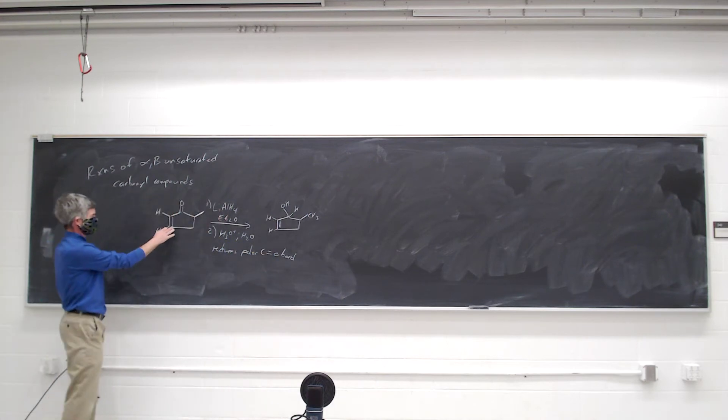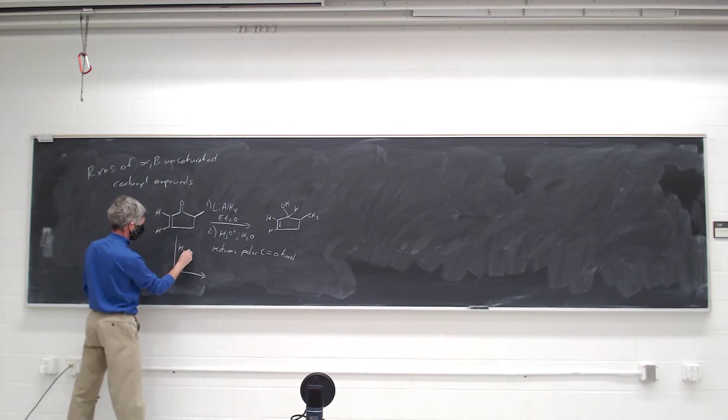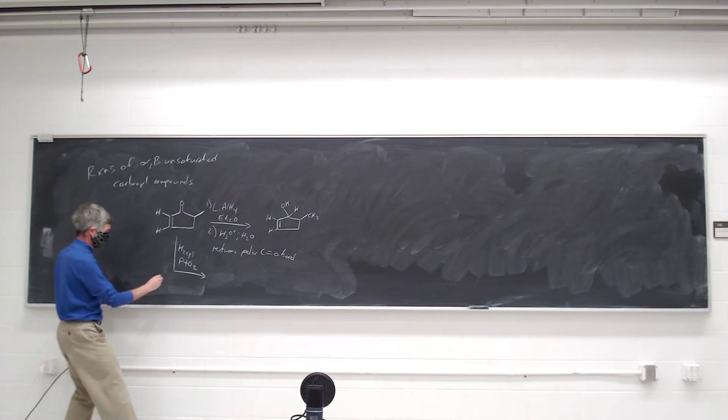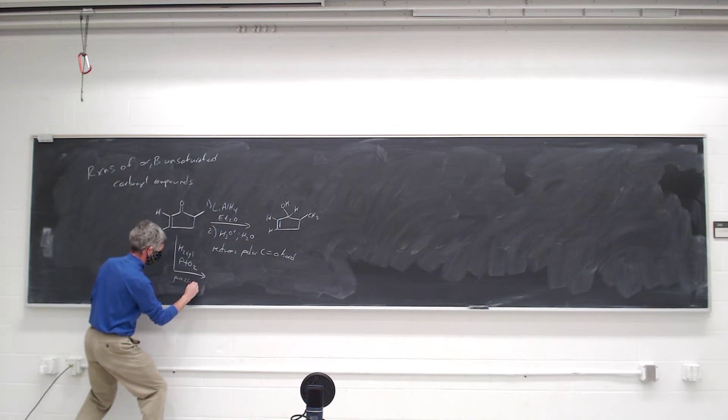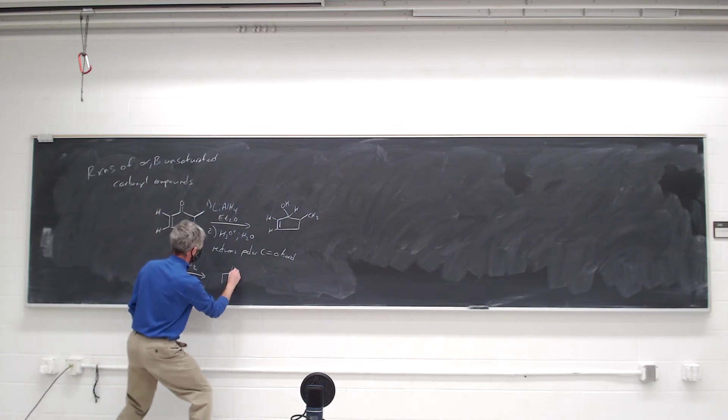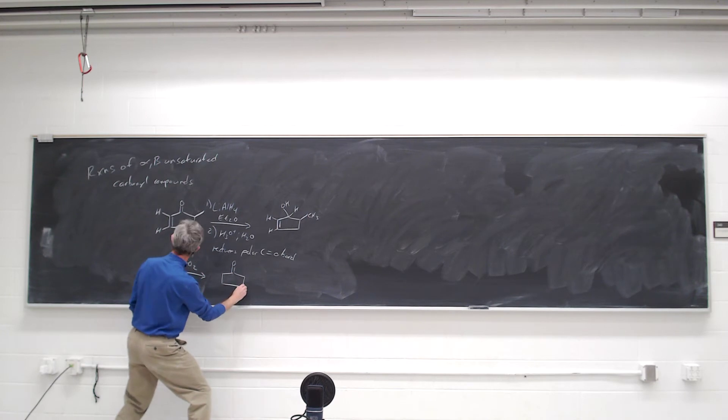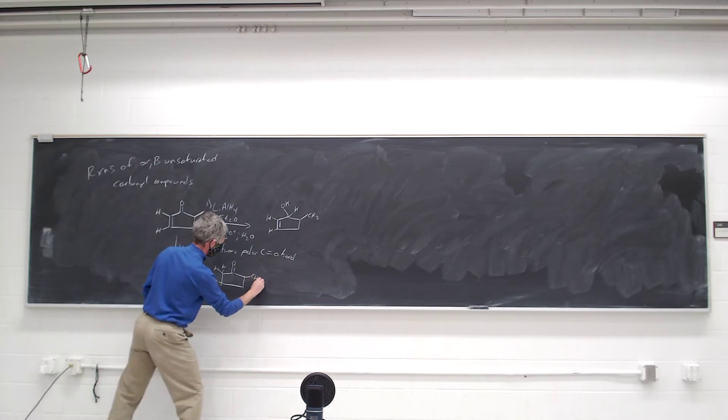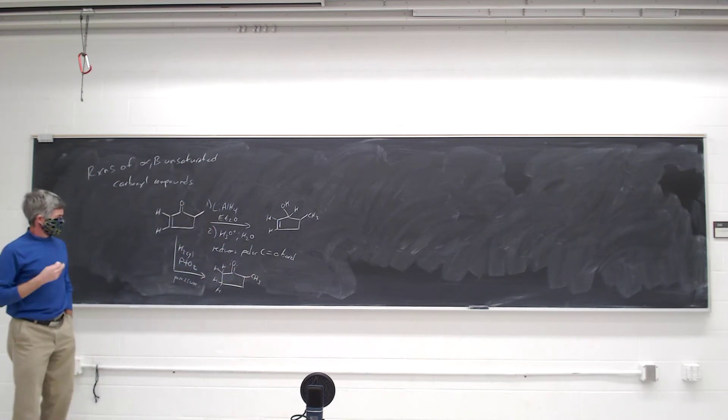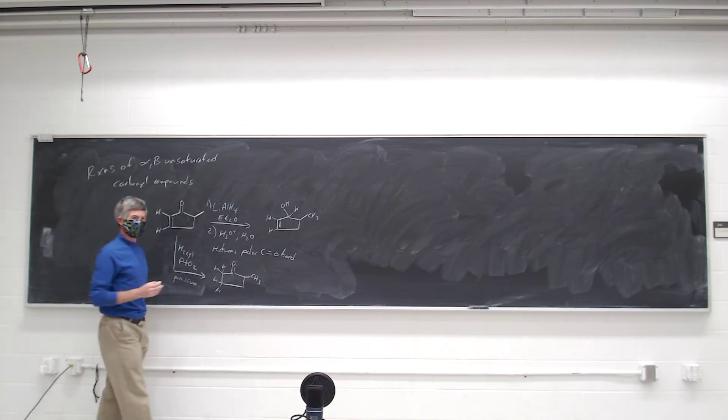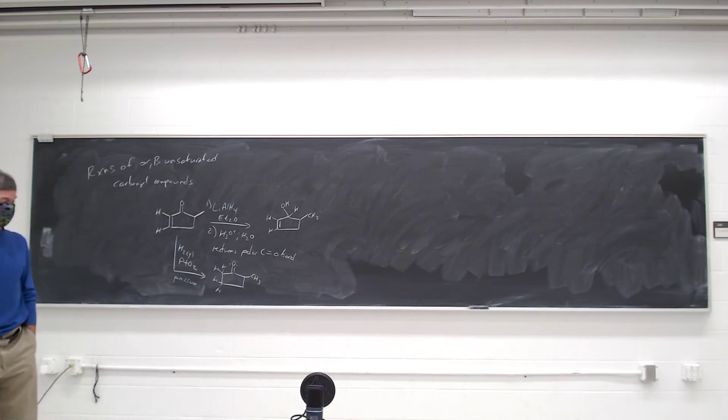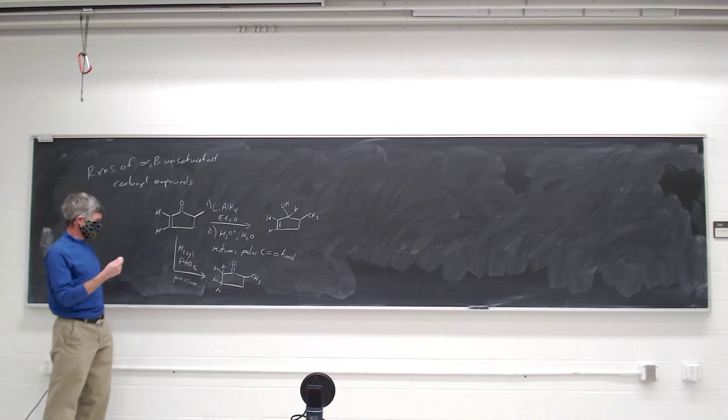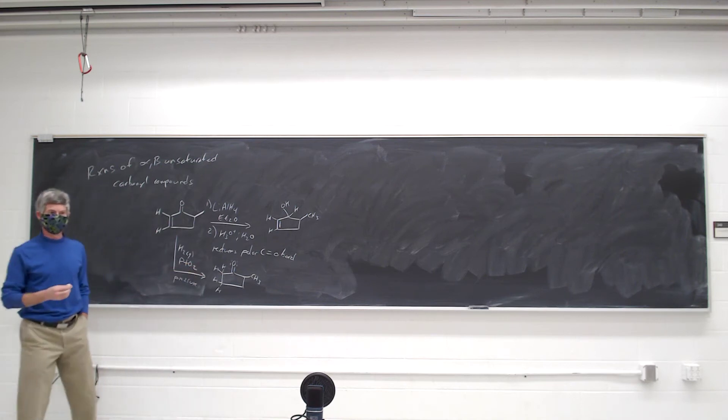You can reduce the carbon-carbon double bond without reducing the carbon-oxygen double bond in catalytic hydrogenation. With palladium oxide, the atom catalytic pressure. While it is possible to reduce the carbon-oxygen double bond by catalytic reduction, it's much less favorable. So if you keep the pressure low enough, you can get it to reduce the carbon bond without touching the carbon-oxygen bond.